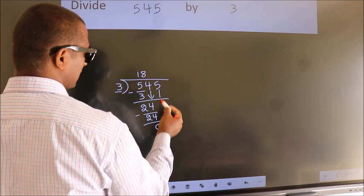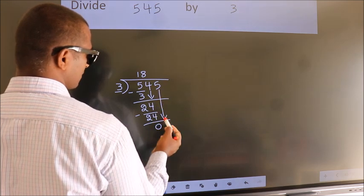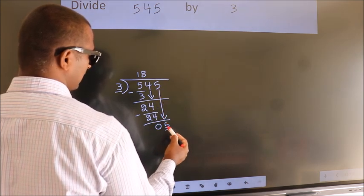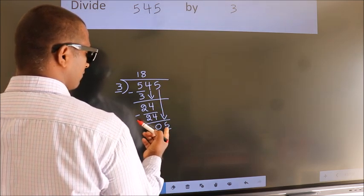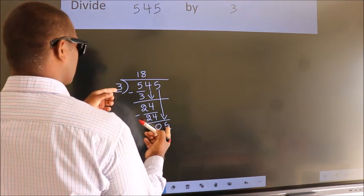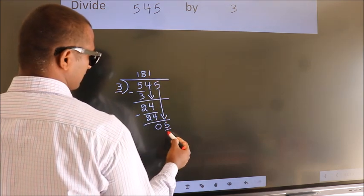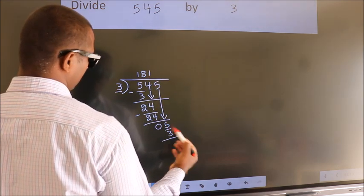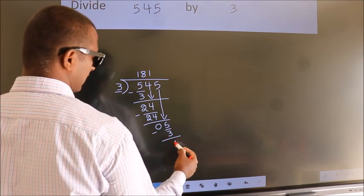After this, bring down the beside number. So 5 down, so 5. A number close to 5 in 3 table is 3 once 3. Now we subtract. We get 2.